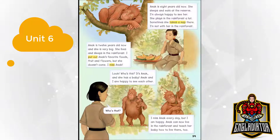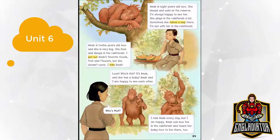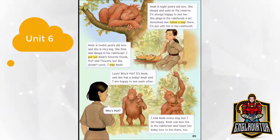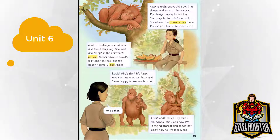I'm always happy to see her. She plays in the rainforest a lot. Sometimes she takes a nap there. I'm not with her in the rainforest. Anak is 12 years old now and she is very big. She lives and sleeps in the rainforest. I put out Anak's favorite foods — fruit and flowers — but she doesn't come. I miss Anak.